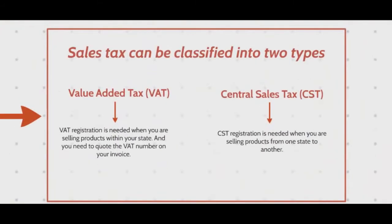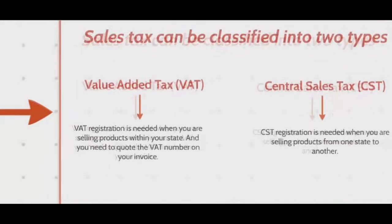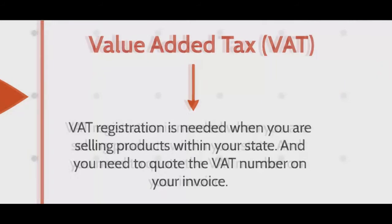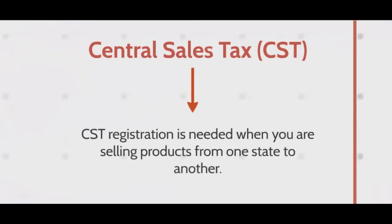Sales tax can be classified into two different categories: Value Added Tax and Central Sales Tax. VAT registration is needed when you are selling products within your state, and you need to quote the VAT number on your invoice. A CST registration is needed when you are selling products from one state to another.